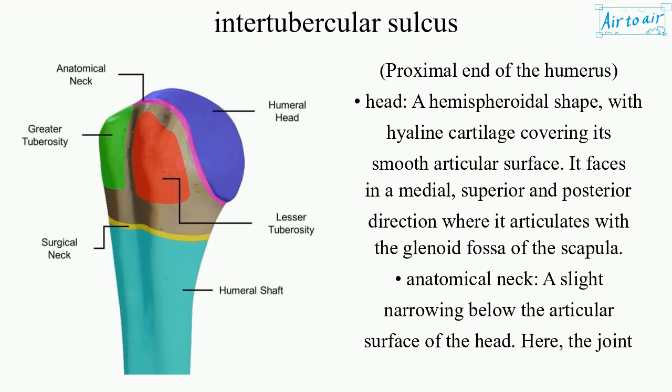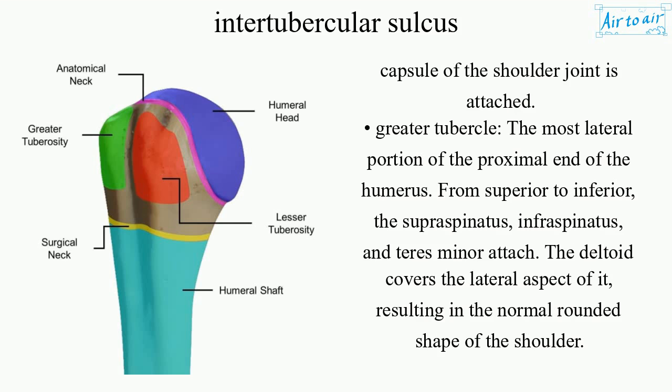Anatomical neck: a slight narrowing below the articular surface of the head. Here, the joint capsule of the shoulder joint is attached.